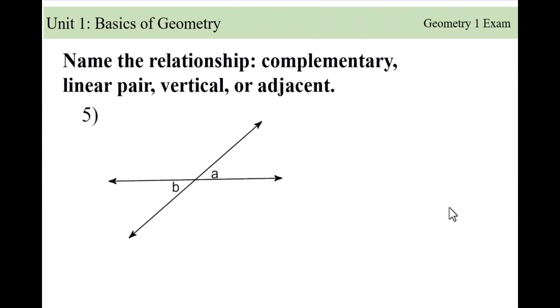This is another definition question — no math. They want to know the relationship between these two angles. Complementary means they add up to 90 degrees — that's not it here. Linear pair means they form a straight line — not true, they're not on the same line. Adjacent means right next to each other — clearly not. These are vertical angles: vertical angles are right across from each other.